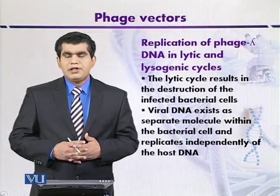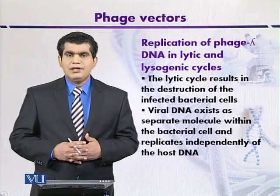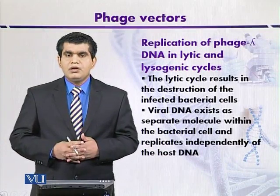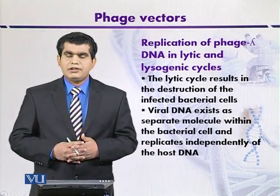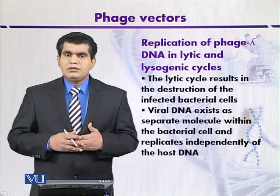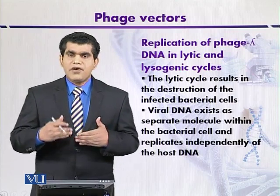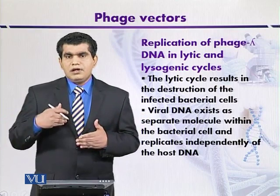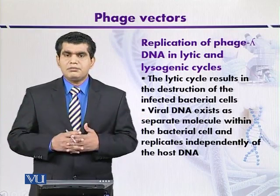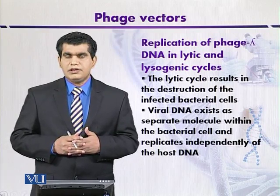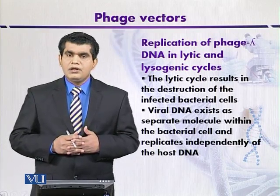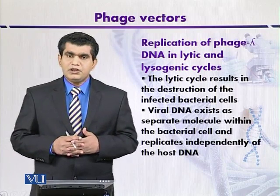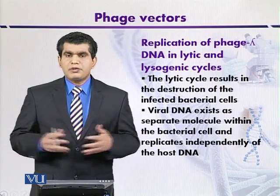Replication of Lambda DNA in lytic and lysogenic cycles. Whenever Lambda phages infect their host organism, they can overcome the host machinery by injecting their DNA. After injection of the nucleic acid or Lambda genome, there are two possibilities.